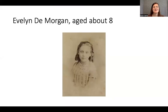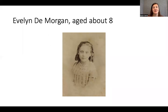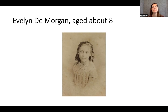Evelyn De Morgan was born into an upper middle class household in London. Her parents were Anna Maria Spencer Stanhope of Cannon Hall in Yorkshire and Percival Pickering, QC. Her father was part of Queen's Counsel and her mother came from the landed gentry. They were a well-off family who had moved to London and raised their four children there — Evelyn, her two brothers, and her sister Wilhelmina Stirling. They had a very comfortable home life and childhood.